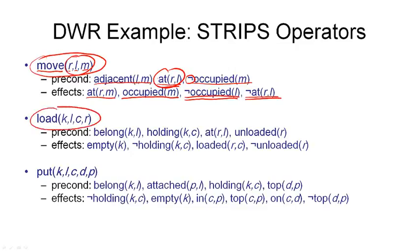The second example is the load operator: loading with crane K at location L, loading container C onto robot R — four arguments in total. There are no negative preconditions here. The positive preconditions are: the crane must belong to and be at that location, the crane must be holding the container, the robot must be at that location and must be unloaded. The effects are: the crane will be empty and will no longer hold the container, the container will be loaded onto the robot, and the robot will no longer be unloaded.